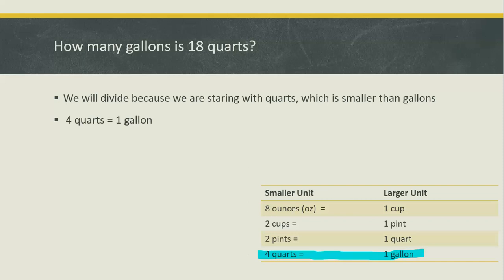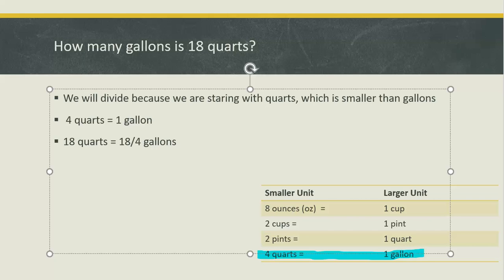Our chart reminds us that four quarts is equal to one gallon. This means four is the number we're going to divide by. So 18 quarts is equal to 18 divided by four gallons. 18 divided by four is four and a half. So 18 quarts is equal to four and a half gallons.